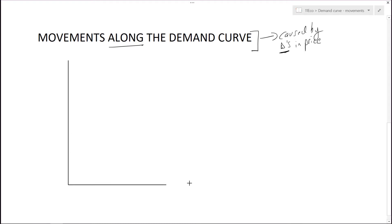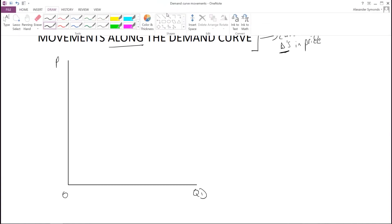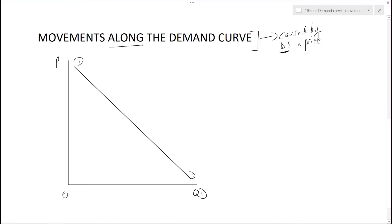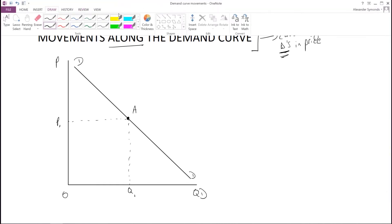So we've got price on one axis, quantity demanded on the other, and zero at the origin. We'll now put in our demand curve. Please note that it doesn't touch the axes, because we really don't know the exact value for quantity demanded when price is at zero. So we'll put in point A, which equates to a specific price and quantity. When looking at movements along the demand curve, there are two situations we need to look at.